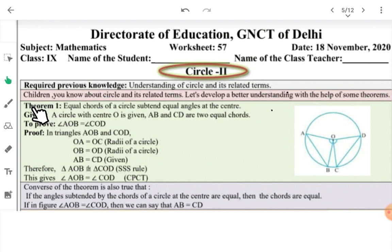Theorem number 1, which is very important: equal chords of a circle subtend equal angles at the center. Kisi circle mein jo bhi chords equal honge, wo center par equal angles subtend karenge. As given here, we have a circle with center O, and AB and CD are two equal chords.